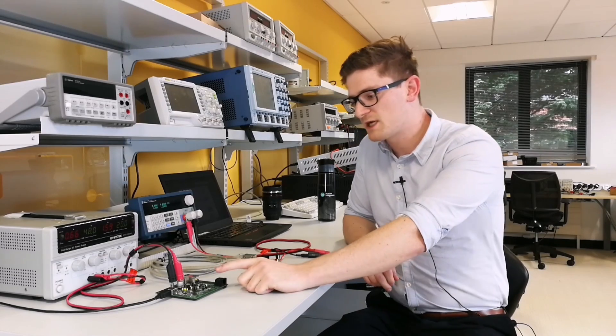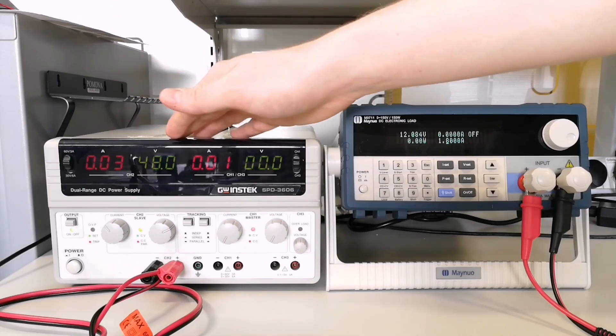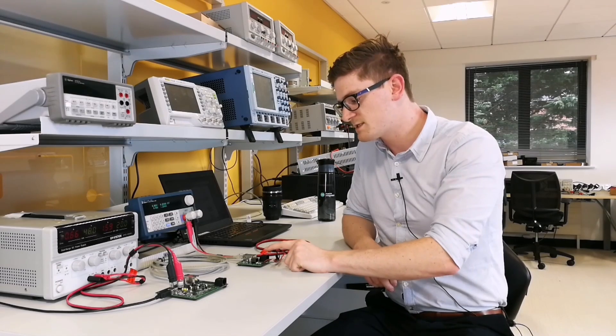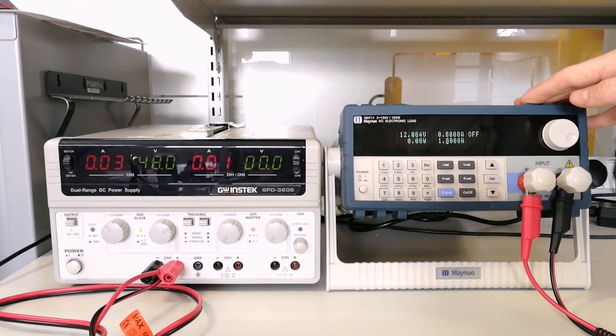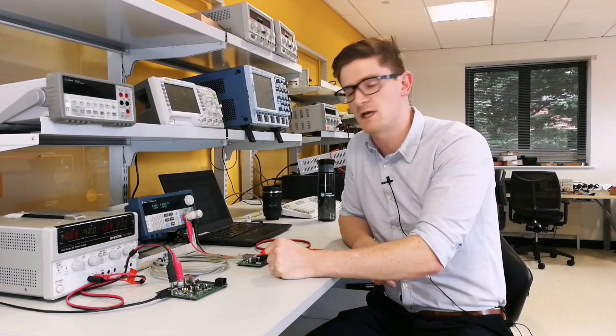So here we have our MAX 5971B which is connected to our 48-volt power supply and our MAX 5969B which contains a galvanically isolated flyback DC-DC converter to give us 12 volts at our load.